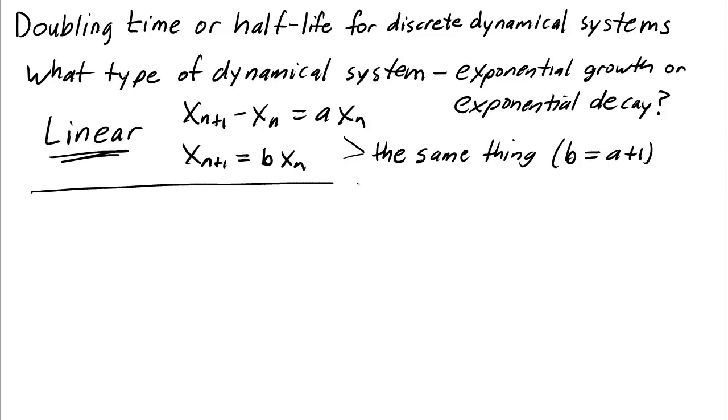For these linear equations, what does the solution look like? For the equation shown right here, the solution would look like xn equals b to the power of n times x naught, or equivalently, xn equals (a+1) to the power of n times x naught. Same thing, right?